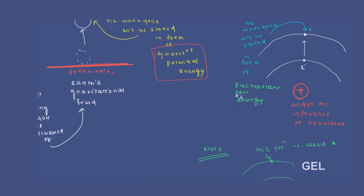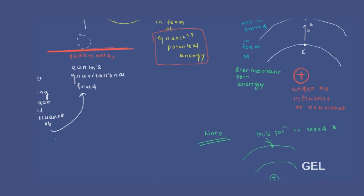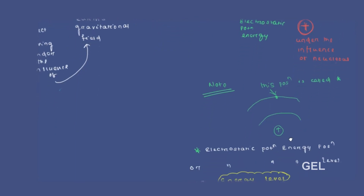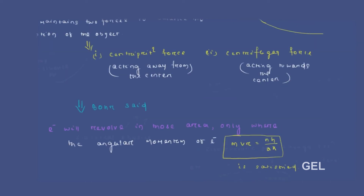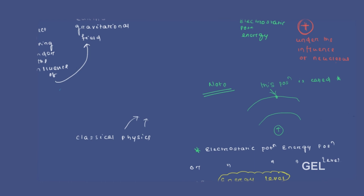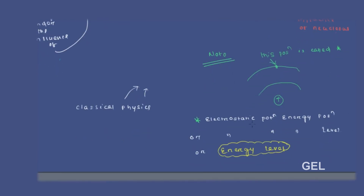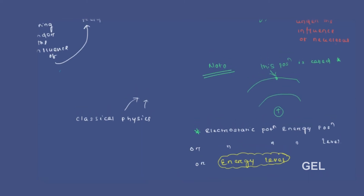Electrostatic potential energy is the energy stored inside the electron in the form of work done, and the positions will be called as electrostatic potential energy positions or energy levels. These things were valid in case of classical physics. But in modern physics, the word 'possible' got added to this name — electrostatic possible potential energy level.